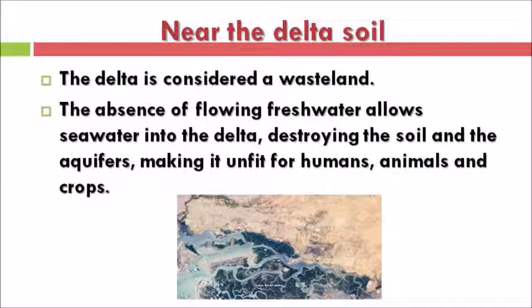The delta area is very low-lying. When fresh water mixes with sea water, the soil is not capable of supporting agriculture or crops. The soil and water in this area are not good for humans, animals, or crops.